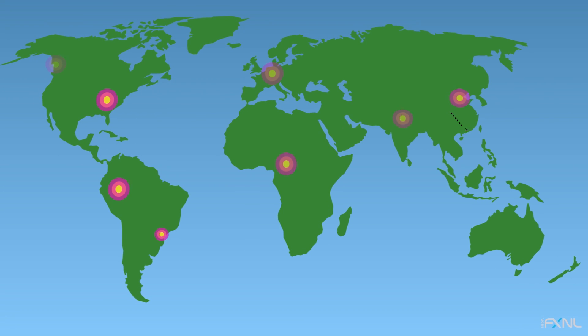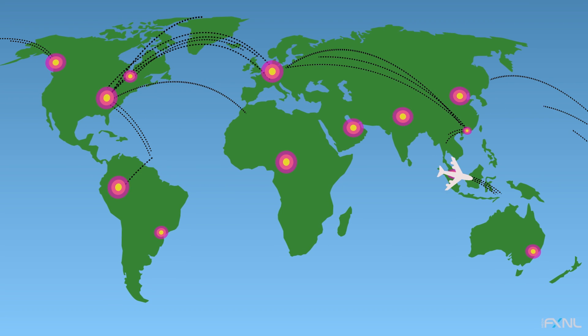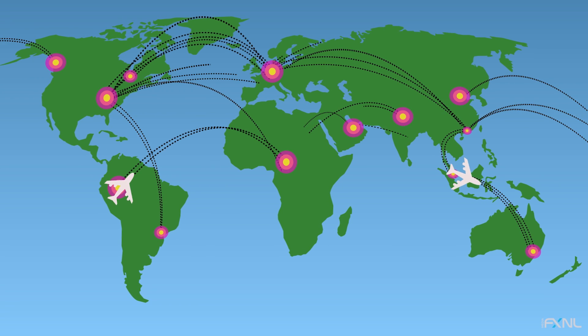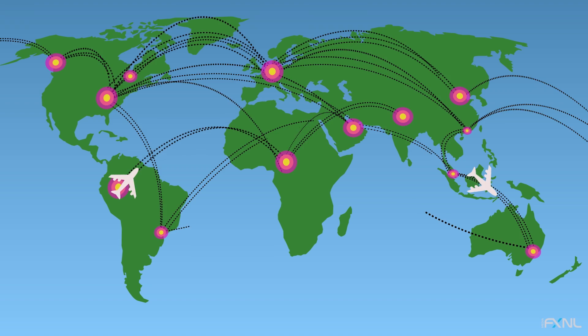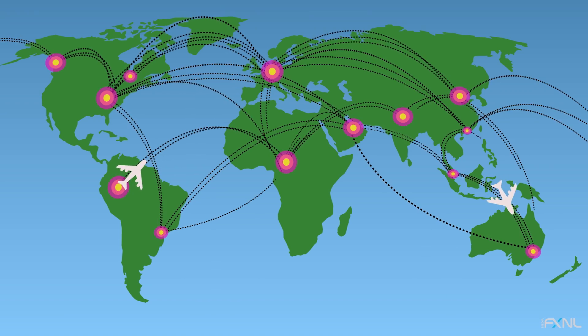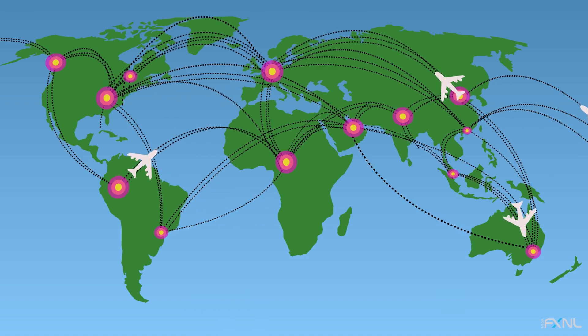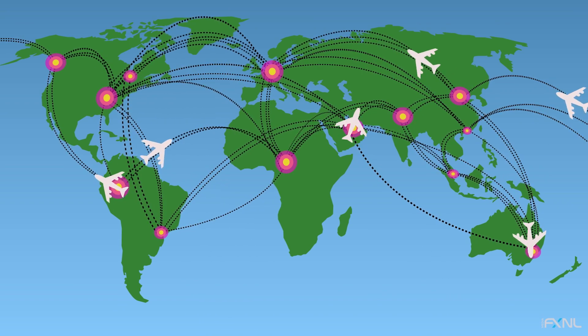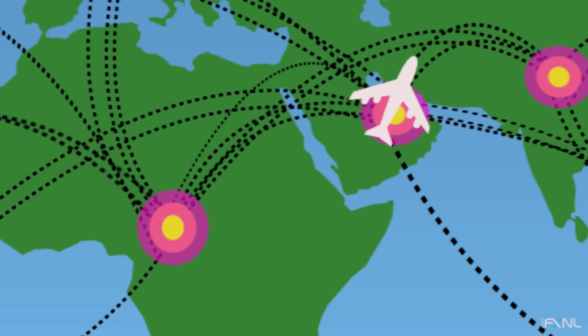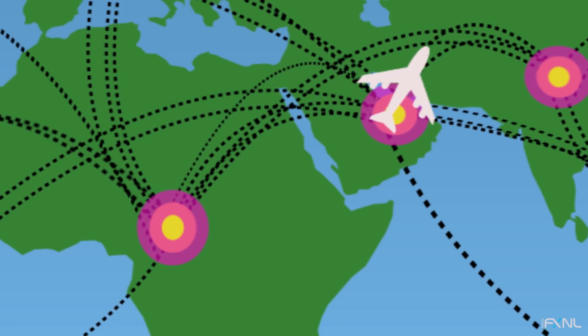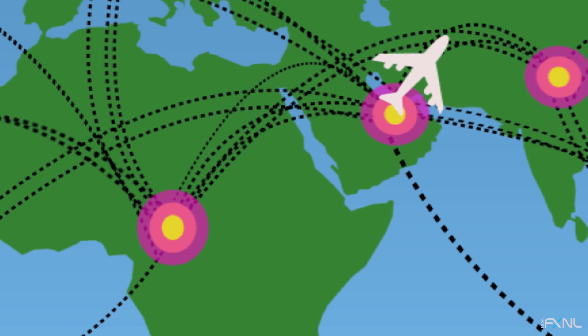Imagine your brain as a network of all the airports, airplanes, and their flight paths around the world. This network represents the brain cells or neurons and all of their connections.